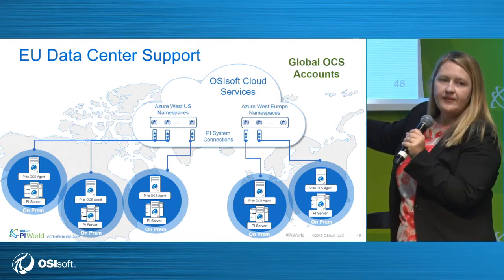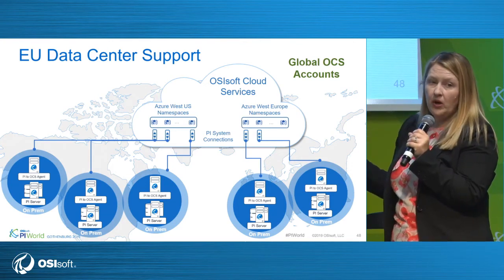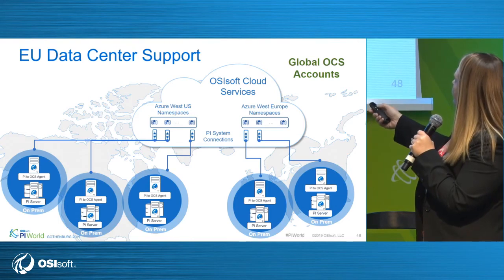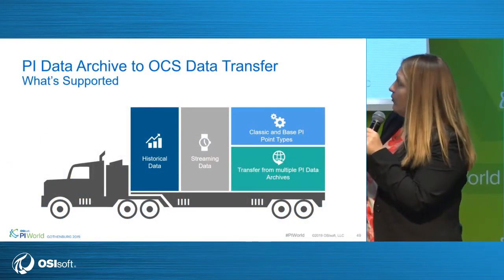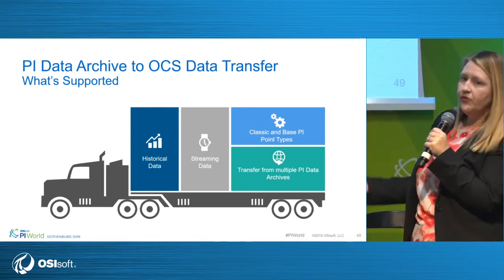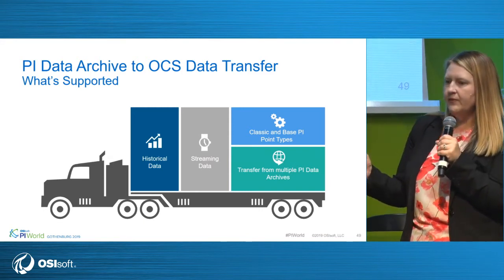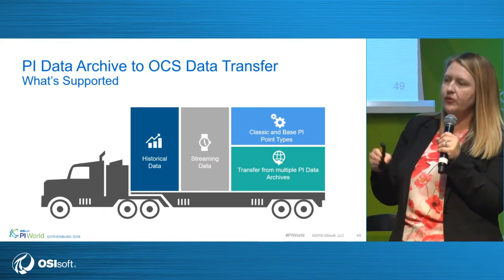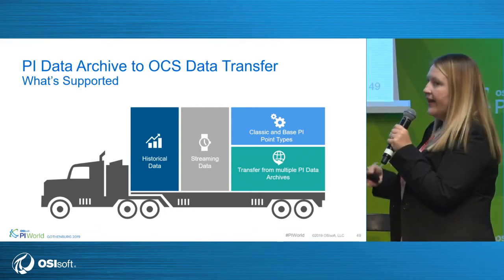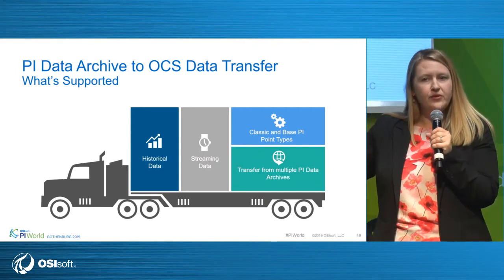A note on architecture: plan to run your PI to OCS agent on a separate computer from your PI Server — technically it works on the same machine, but like we say with any interface, running it separately gives your PI Server more resources. In terms of what data types are supported today: you can pull over historical data, streaming data (the most recently archived value — newly archived values get sent), both classic and base PI point types including analytic results, and data from many different data archives — each archive uses its own PI to OCS agent.